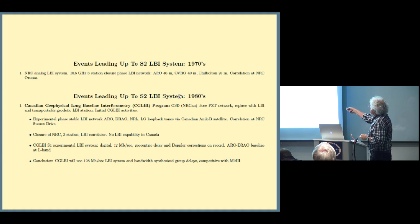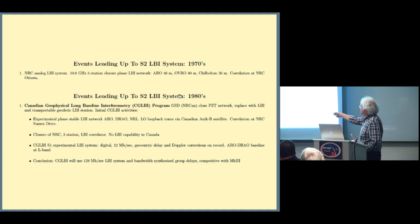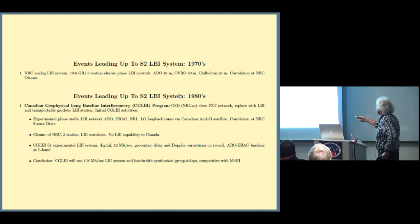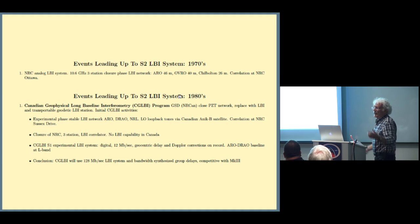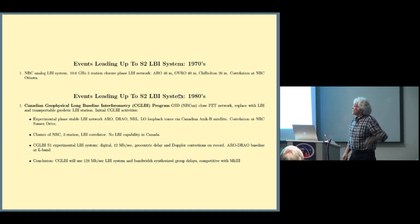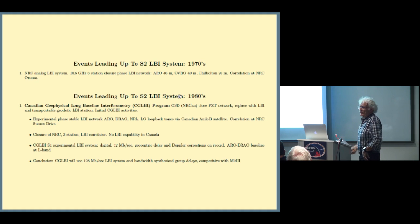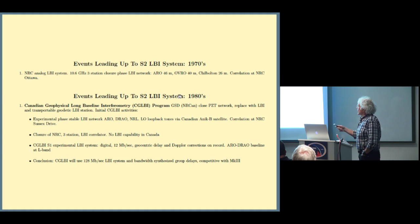The first real movement in Canada to begin a geodetic geophysical LBI system was the decision by NRCan geodetic survey to close their photographic Zenith tube telescope network and replace it with LBI technology. We began an experimental phase involving Alan Yen, University of Toronto, and York. We first tried phase-stable long baseline interferometry. We took the local oscillator tones and looped them back through the ANIK-B satellite in both directions. It was a three-station experiment involving NRL, Naval Research Lab. We got some good demonstrations of this technique, but we didn't pursue it further.